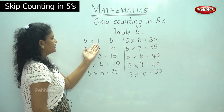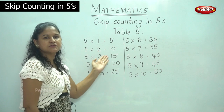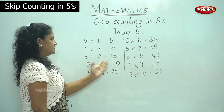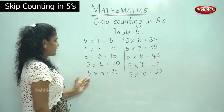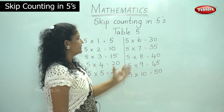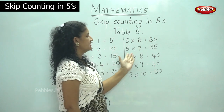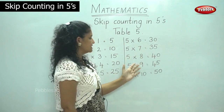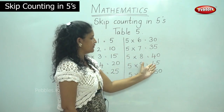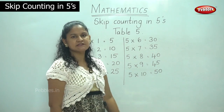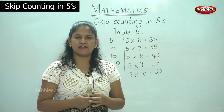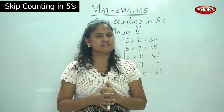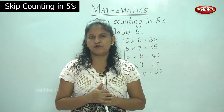So 5 times 1 gives you 5, 5 times 2 gives you 10, 5 times 3 gives you 15, 5 times 4 gives you 20, 5 times 5 gives you 25, and 5 times 6 gives you 30, 5 times 7 is 35, 5 times 8 is 40, 5 times 9 is 45, and 5 times 10 is 50. So this is your table 5. I do hope you understood how to do the table 5. This is just a small tip for you to learn.